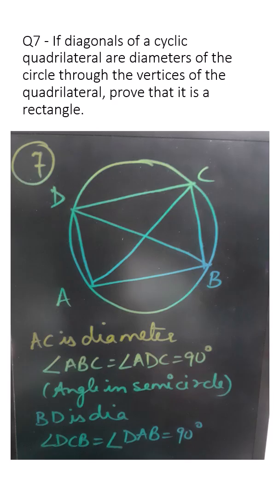So we are discussing exercise 9.3 question number 7. It says if the diagonals of a cyclic quadrilateral are diameters of the circle through the vertices of the quadrilateral, prove that it is a rectangle.